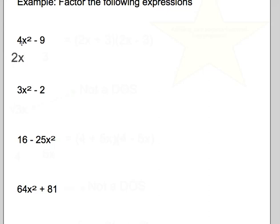Well, 4x², the perfect square of that is 2x. -9 is 3. And so we have an answer. We take our first term and place it in the first spot. Our last term in the last spot of our binomials. And we just change the signs. Plus and minus.